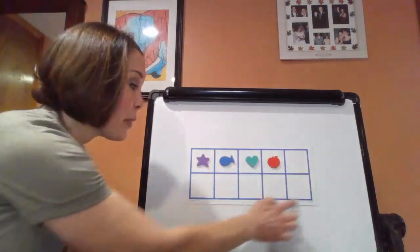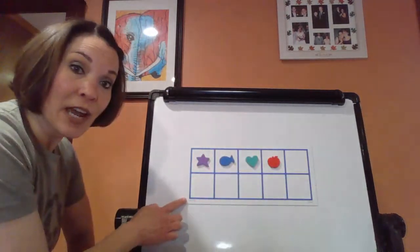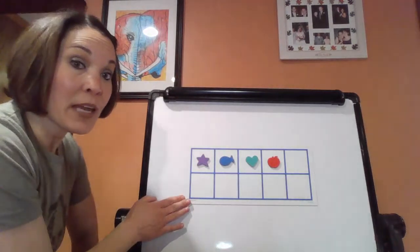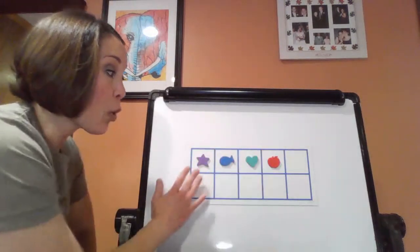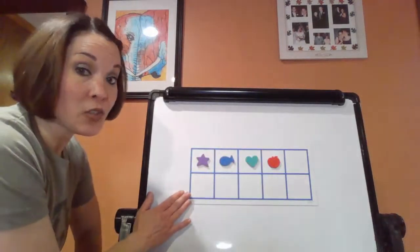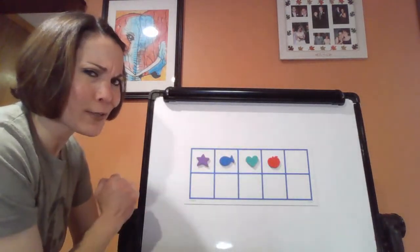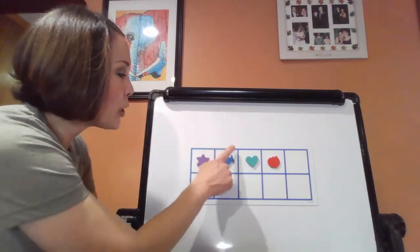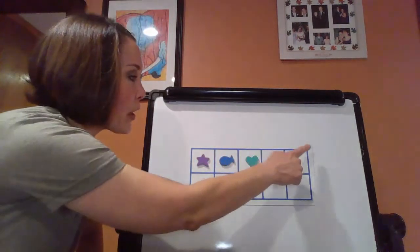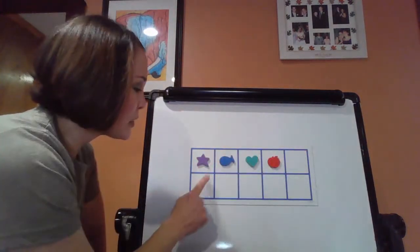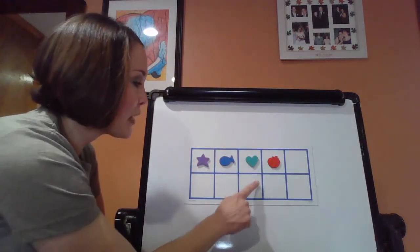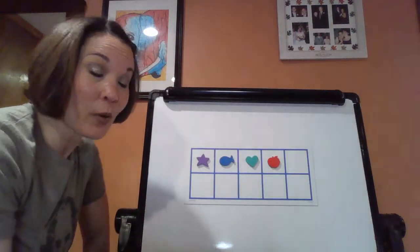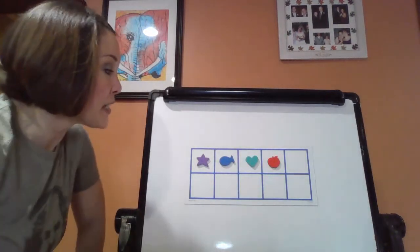First, I have a 10 frame. As you can see, a 10 frame is a table of 10 squares. So let's double check and make sure this is a 10 frame. We have 1, 2, 3, 4, 5, 6, 7, 8, 9, and 10. All right, so we're good on that 10 frame.